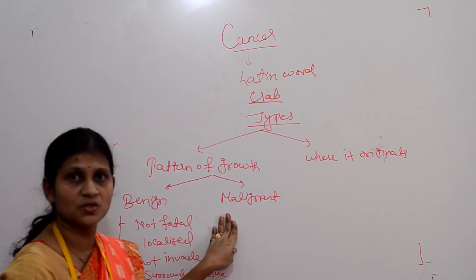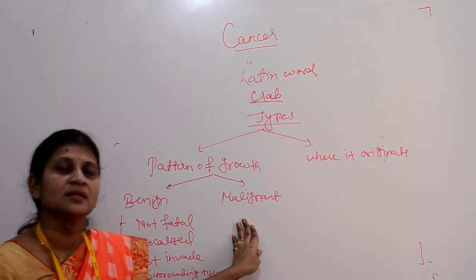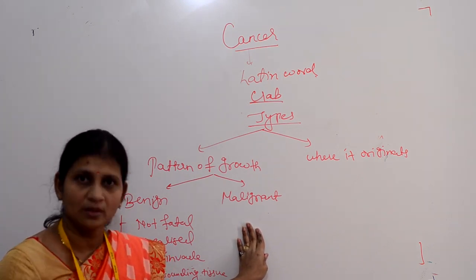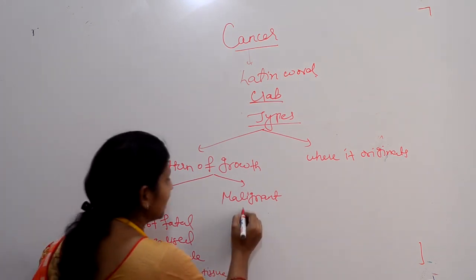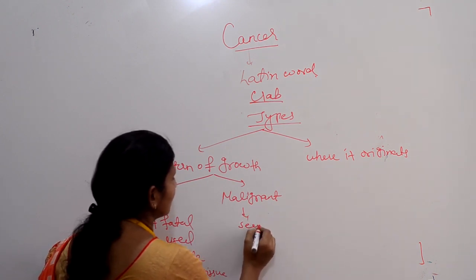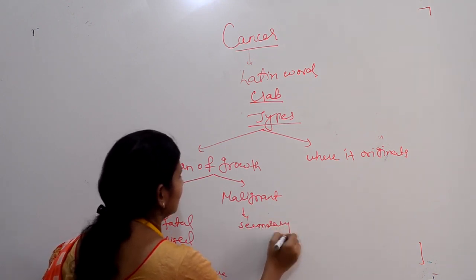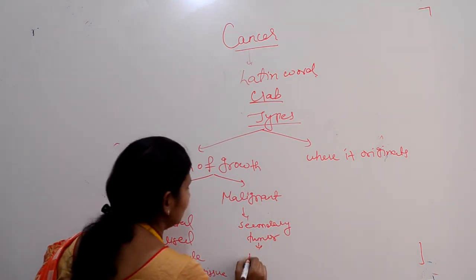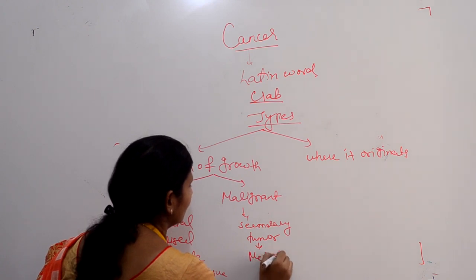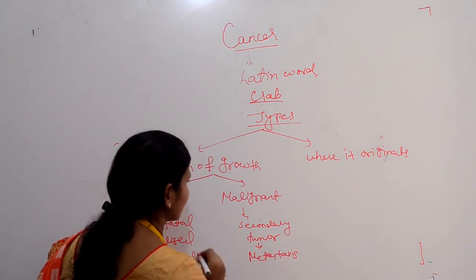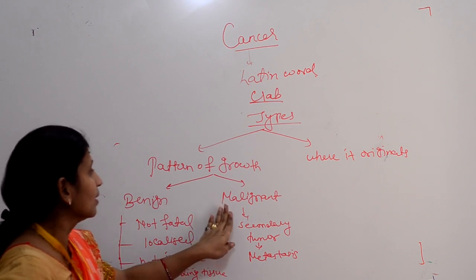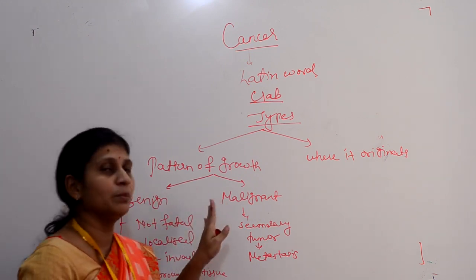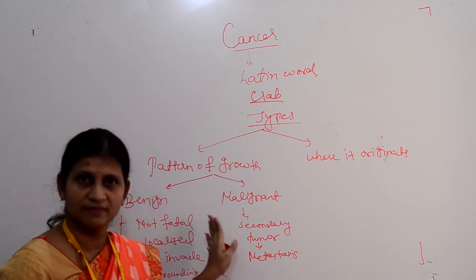In case of malignant tumor, the tumor may invade the surrounding tissue and surrounding organs. This may lead to formation of secondary tumors, and this process is termed as metastasis. Malignant cancers are very fatal.